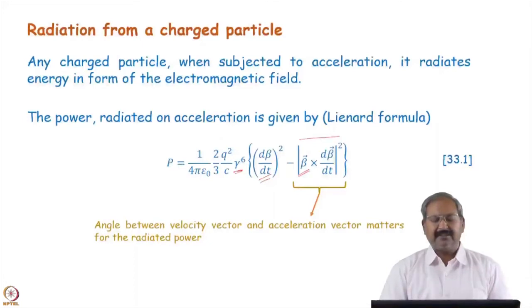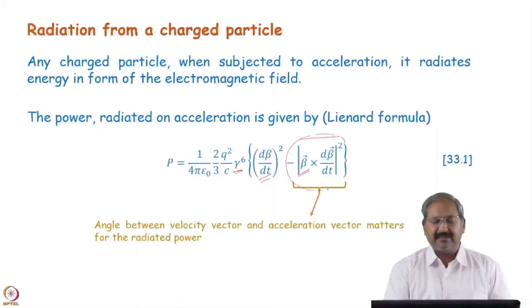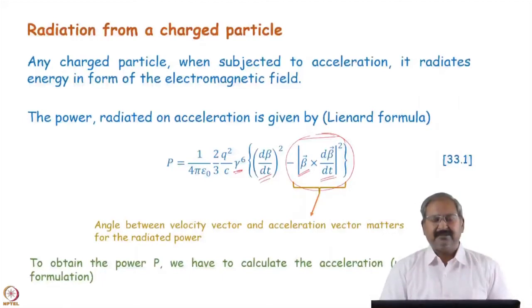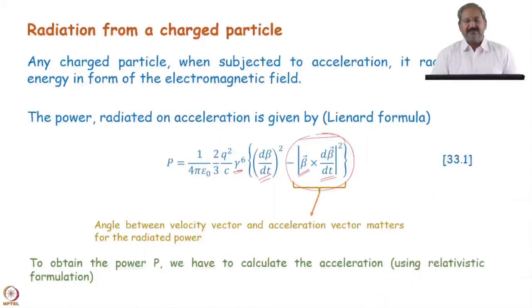This is an important remark about this formulation, and we will see how this cross product term can be understood. For obtaining the power, we have to calculate d_beta/dt — the acceleration of the charged particle. Because we are working with extreme relativistic cases, we have to use relativistic formulation for obtaining the acceleration.